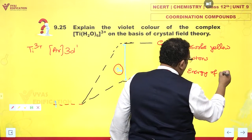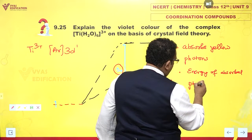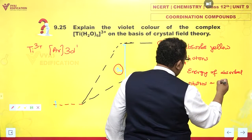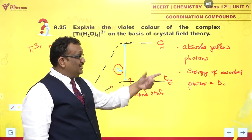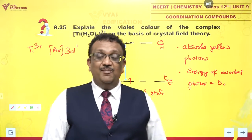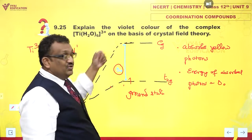Energy of absorbed photons is equal to delta O, which is the crystal field splitting parameter. This incidentally happens to be the same as the energy of yellow-colored photons, and that is why they are the ones absorbed.